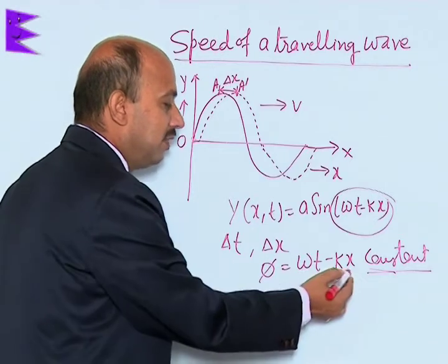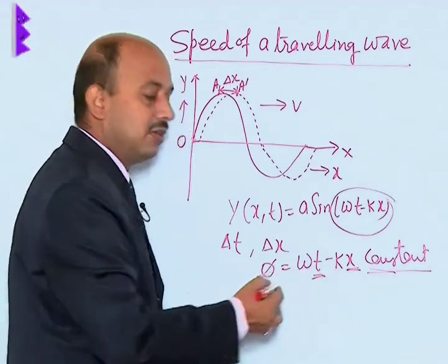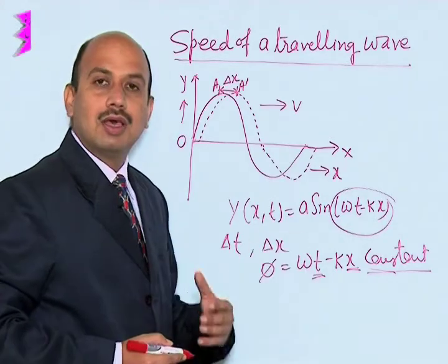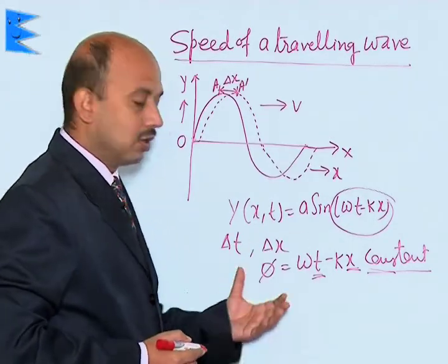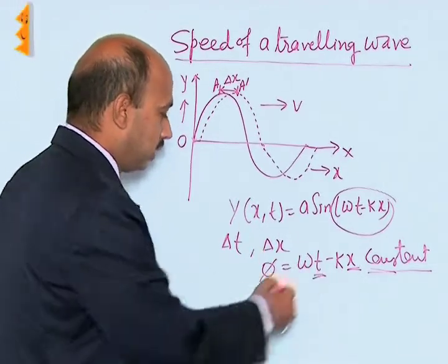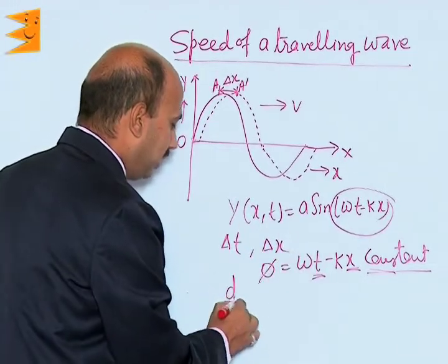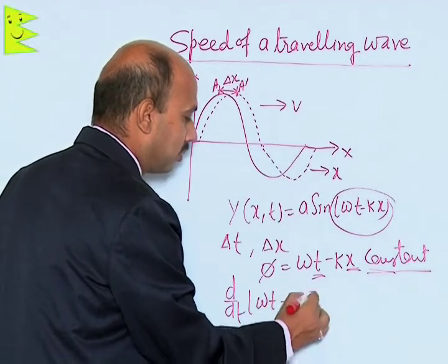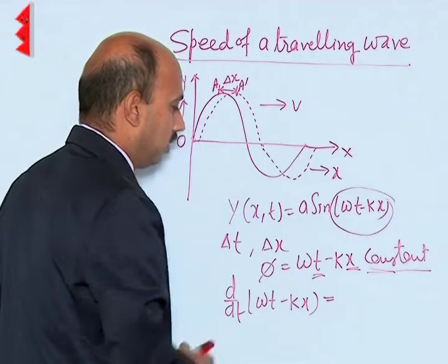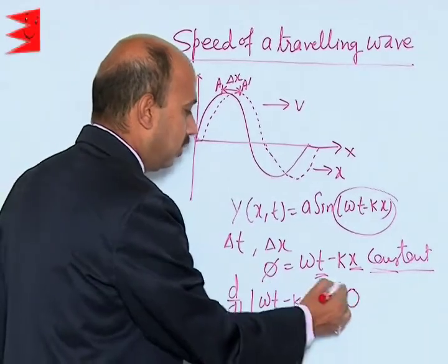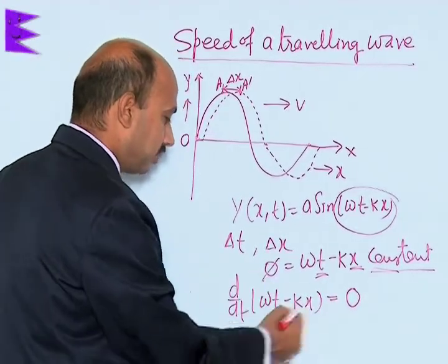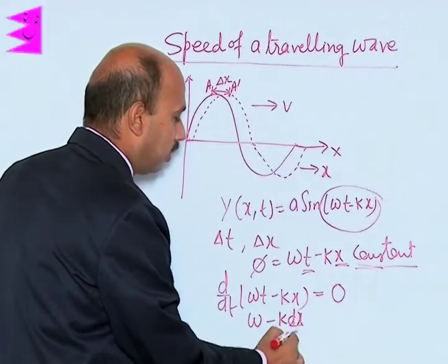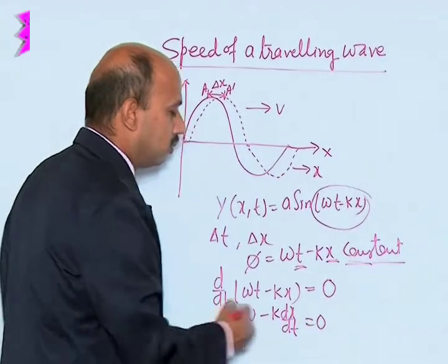To keep the phase constant: if x increases, you have to increase t also — as time increases, x must increase — in this way we can keep it constant. If you differentiate with respect to time, you get d/dt(ωt - kx) = 0, giving ω - k(dx/dt) = 0.